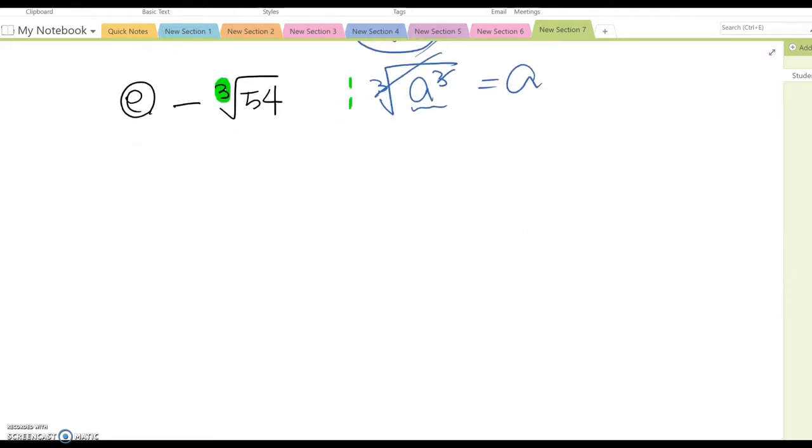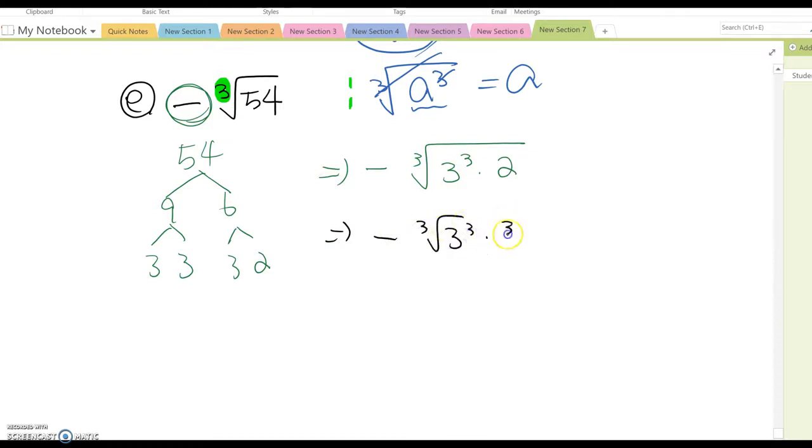We want to find the prime factorization of 54. This is 9 times 6, which is 3 times 3 times 3 times 2. The negative is already outside, so you keep that. Cubic root 3 cubed times 2, which means negative cubic root 3 cubed times cubic root 2. This cancels out, so it becomes negative 3 cubic root 2.